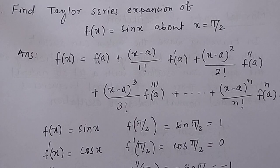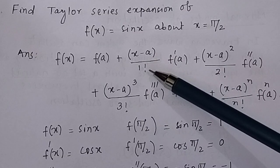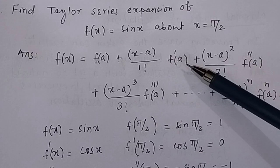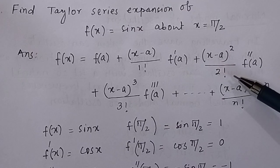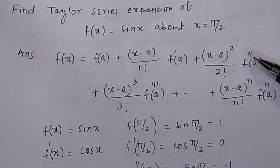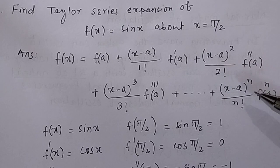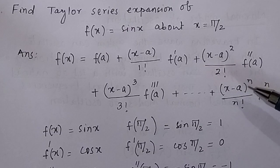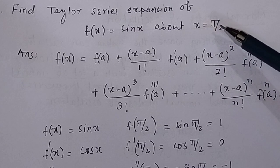We know from the Taylor series expansion that f(x) = f(a) + (x - a)/1! · f'(a) + (x - a)²/2! · f''(a), similarly up to the nth derivative, that is (x - a)^n / n! · f^(n)(a), and here a = π/2.